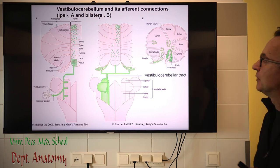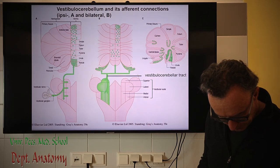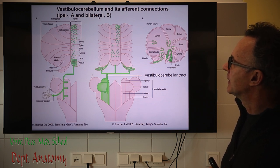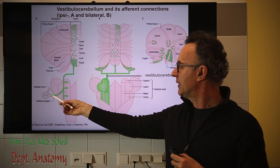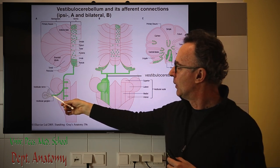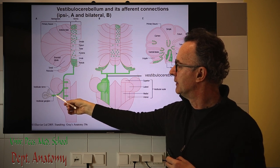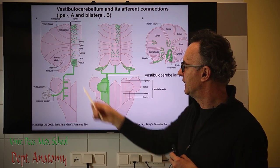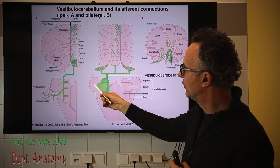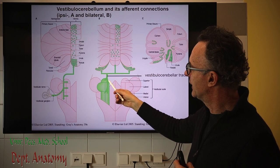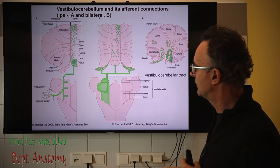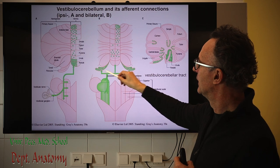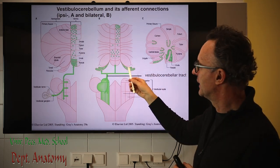Now let's see the afferent pathways of the cerebellum. Starting from the most ancient: the vestibulocerebellar tracts. Receptors are in the inner ear, in the labyrinth, and we have two options. One is when the vestibulocochlear nerve — cranial nerve VIII — carries input directly to the nodulus and flocculus ipsilaterally. The other option is when the vestibulocochlear nerve terminates first in three vestibular nuclei — with the exception of the lateral — so the superior, medial, and inferior vestibular nuclei, and from there the vestibulocerebellar tract terminates contralaterally in both the nodulus and flocculus.